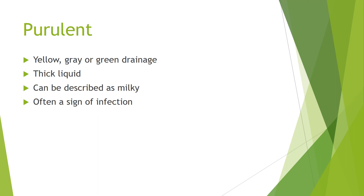The last type of drainage we're going to cover is purulent. This is a drainage that is yellow, gray, or green, and it's usually a thick liquid — often described as milky. This is a sign of infection. So if you suspect that your patient has purulent drainage, you're going to want to document it immediately and bring it to the physician's attention.